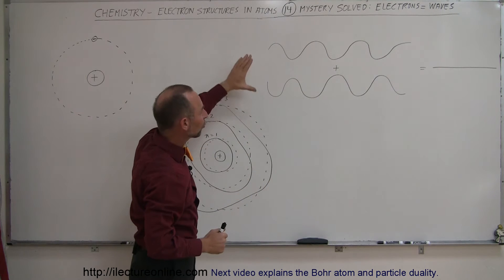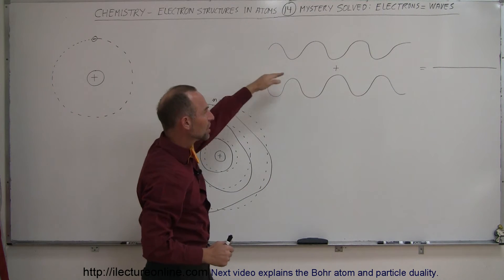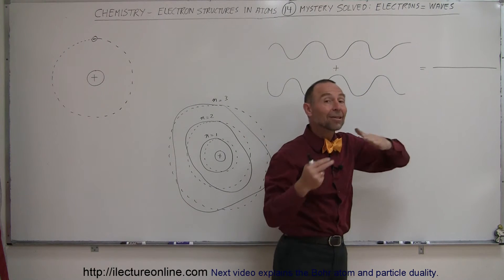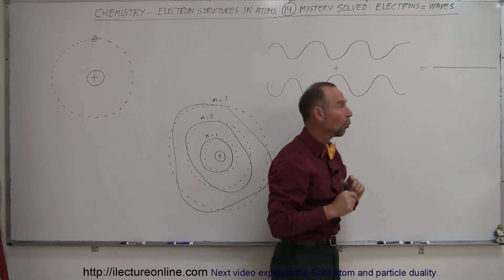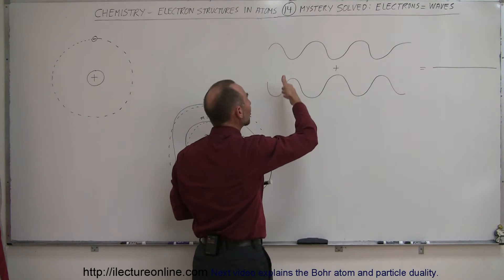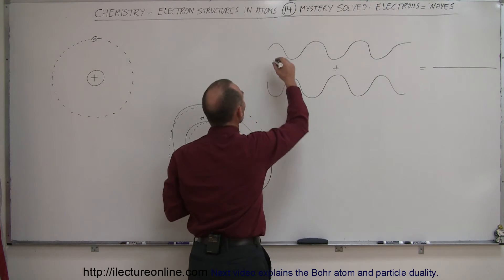Now, if you put those two waves together, what happens? You get nothing at all — they cancel each other out. Why is that? Because the two waves are 180 degrees out of phase.